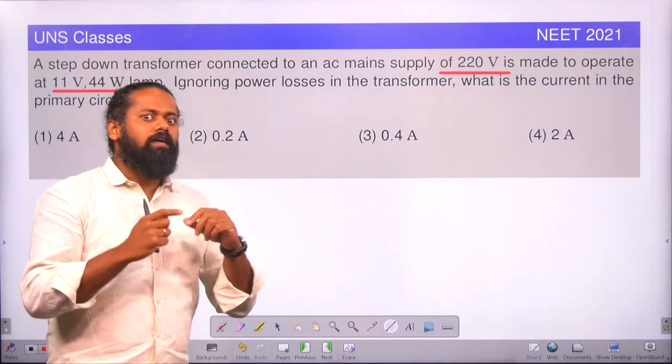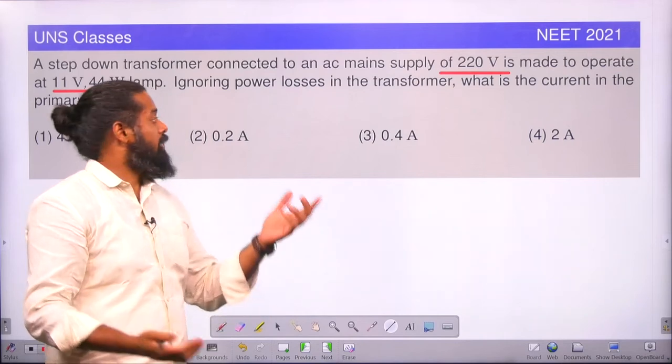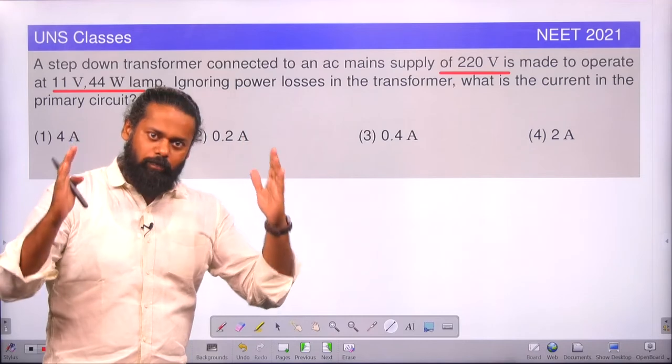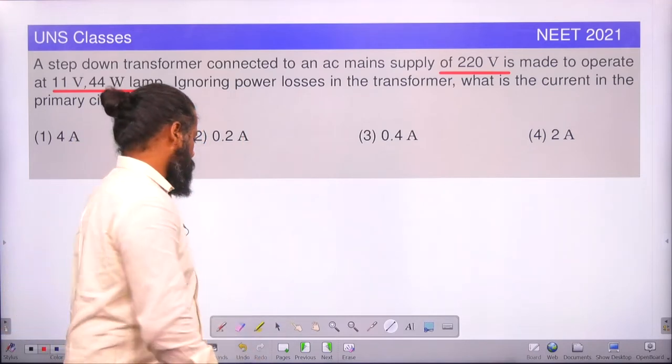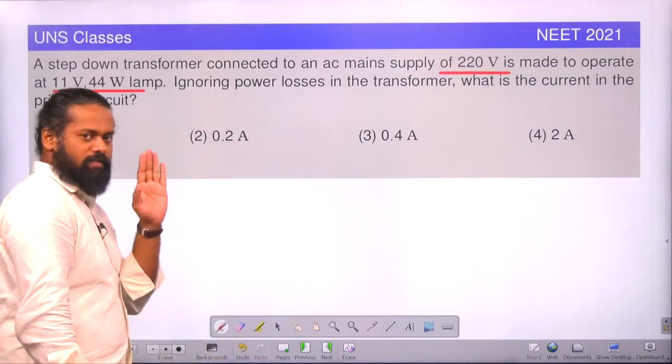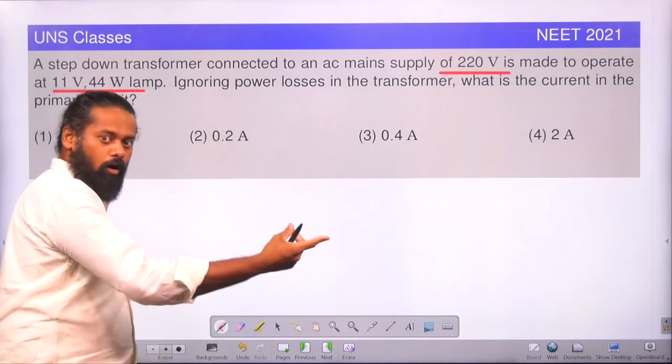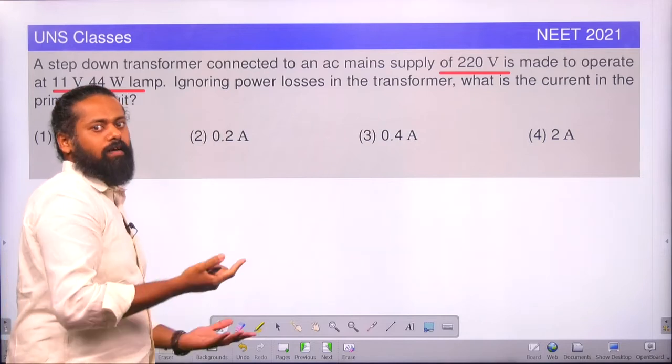So input power is almost same as output power. Especially is given in the problem, ignoring power losses. So input and output power should be same. That is the logic. So here you can say that if you are consuming 44 watt in the output, that means 44 watts power we have to give in the input.